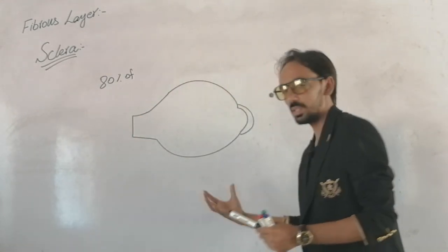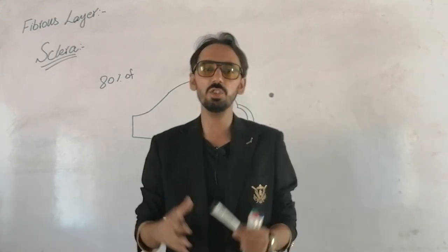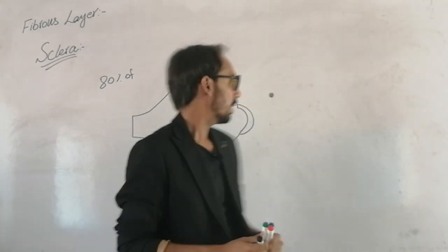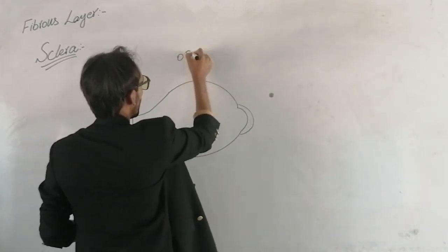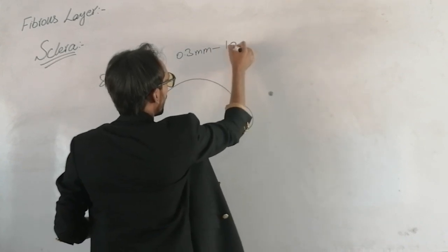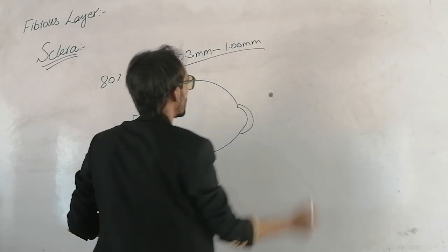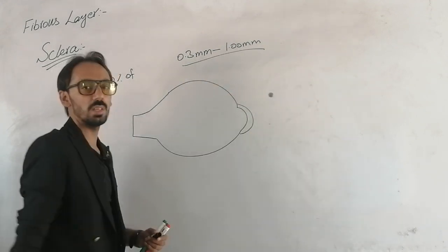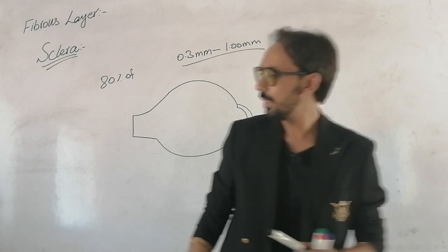If we discuss the thickness of the sclera, the thickness varies at different levels. The sclera is 0.3 mm to 1.0 mm in thickness at different levels, which we will discuss later.